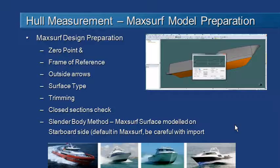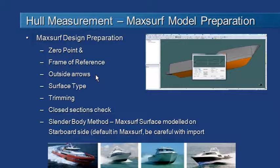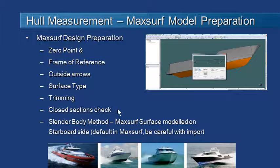Before using any of these methods, we need to make sure the MaxSurf design file is prepared correctly — the same type of setup as for HydraMax for stability. The zero point and frame of reference must be set up correctly. Make sure the arrows on the vessel point in the correct direction. If using skin thickness, ensure that the surface type is set to 'hull' for wetted surfaces and 'internal' for everything else. Hull Speed is only interested in the underwater shape, so ensure surface trimming produces clean, unambiguous closed sections throughout the design. For the slender body method, also verify that your MaxSurf design is modeled on the starboard side — the default behavior — but be careful if data has been imported from another system.